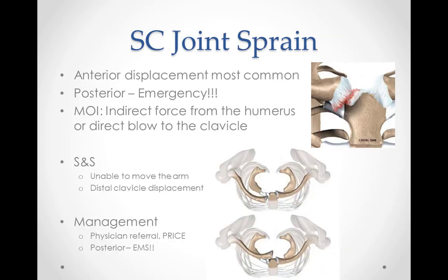The sternoclavicular joint is the only bony connection between the upper limb and the rest of the skeleton, providing stability to the front of the chest and shoulder and allowing for some shoulder movement. During certain activities, stretching or compression forces are placed on the sternoclavicular joint. When these forces are excessive and beyond what the normal joint can withstand, tearing of the ligaments and connective tissue of the joint may occur. This is a condition known as a sternoclavicular joint sprain, which typically occurs due to a direct blow to the point of the shoulder or the top of the chest.